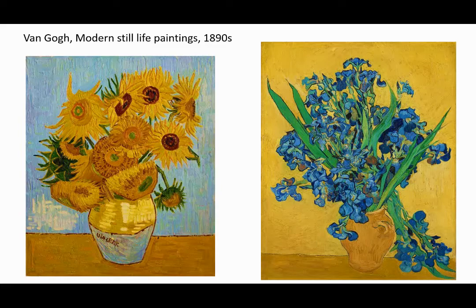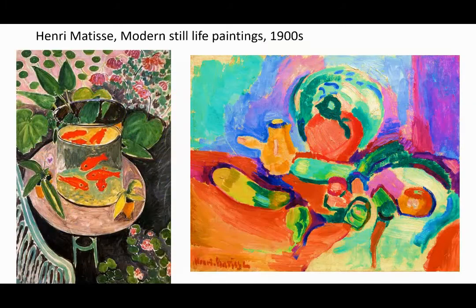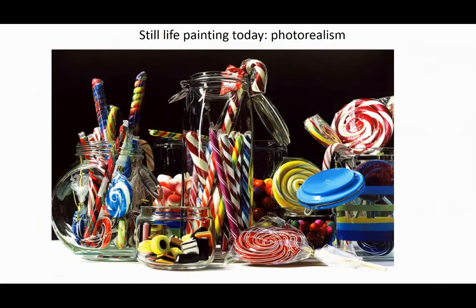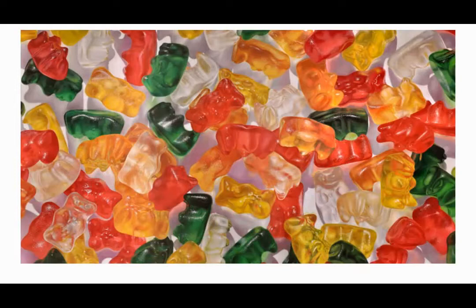By the mid-1900s, modernist painters like Henri Matisse and Pablo Picasso were using still life subjects as starting points for even more radical explorations of color and composition. In the 1960s, a group of artists began to base their paintings on photographs rather than painting directly from life, in a style called photorealism. Although the paintings used realistic techniques similar to those used by the Dutch Baroque painters, the subjects of photorealistic still life tend to reflect contemporary life, technology, and consumer culture.